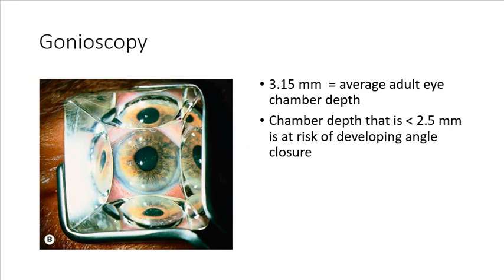So the first technique is gonioscopy, and this is one method to objectively measure the angle. So the average adult eye chamber depth is about 3.15 millimeters, and any chamber depth that is less than 2.5 millimeters is actually at risk of developing angle closure. And so using the slit lamp and a special gonioscopy lens, which is comprised of mirrors, is how an orthoptist or an ophthalmologist can assess the angle. Now, as I said, this is just a very brief overview, and if you feel you need to know more about gonioscopy particularly, you'll have to look at other resources.